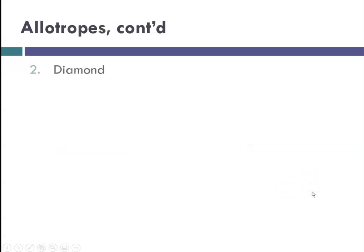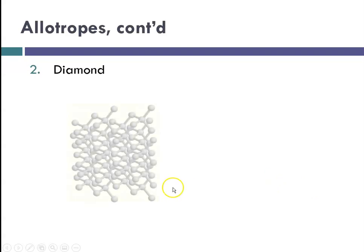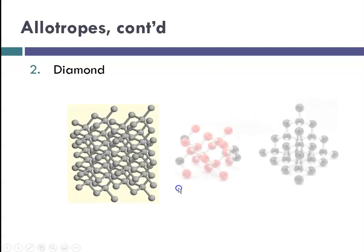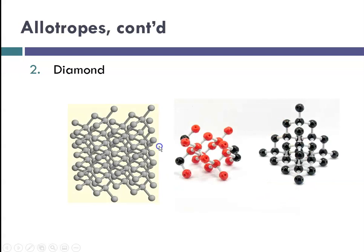A second allotrope of carbon, and my personal favorite, is diamond. Here are three pictures of the diamond. You have all of these six-membered rings that are all attracted to one another, forming a network. This gives diamond a very, very high melting and boiling point, and it's very hard.